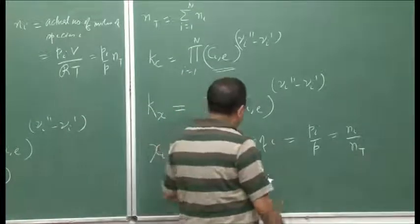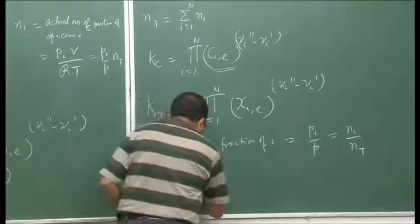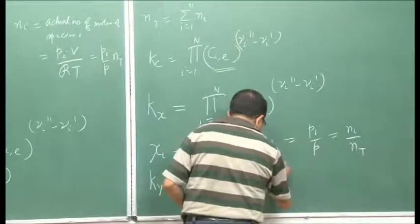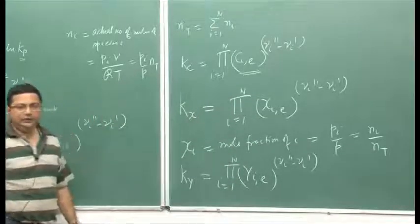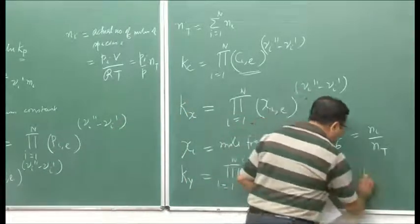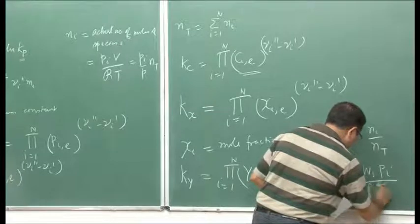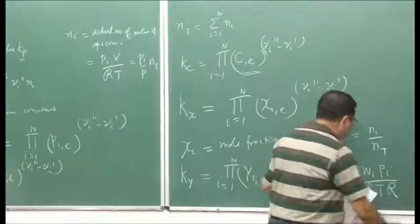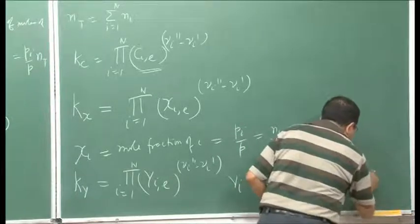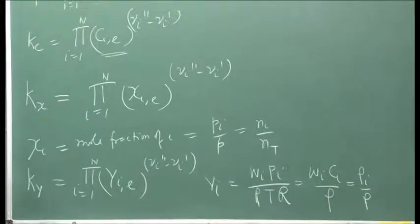Similarly, we can define the equilibrium constant based on mass fraction, Ky. Based on mass fraction, the definition is very similar, where y_i is the mass fraction of species i. That equals molecular weight of species i times partial pressure times ρ_t over R, which is molecular weight times concentration divided by density — or density of species i divided by total mass-average density. That is the definition of mass fraction.